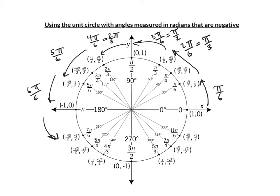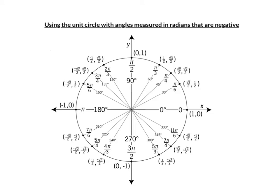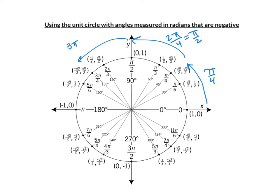I can count by pi over 6's, or I can count by pi over 4's. If I count by pi over 4's, then this would be 1 pi over 4. Here we have 2 pi over 4, which is pi over 2. Here we have 3 pi over 4. And then one more pi over 4 is 4 pi over 4, which is pi.